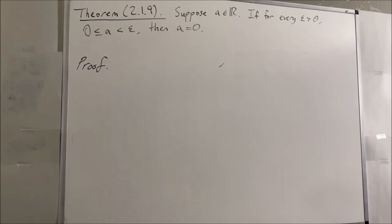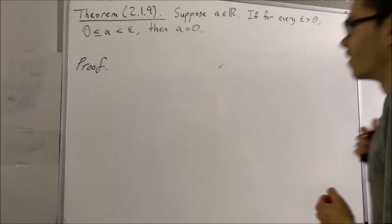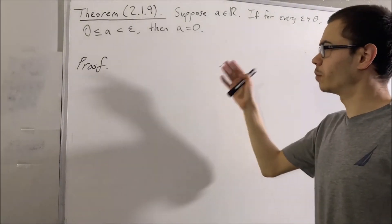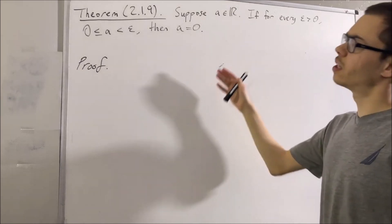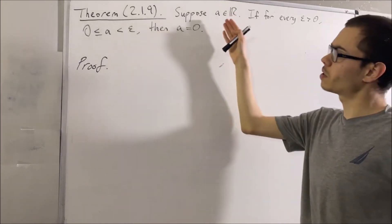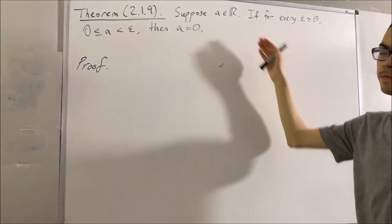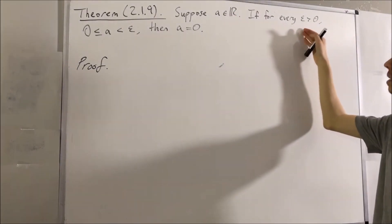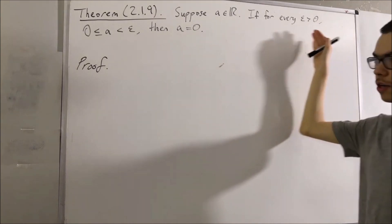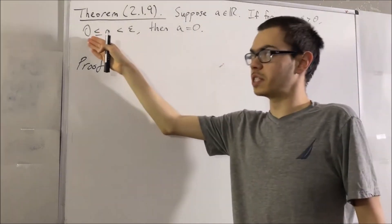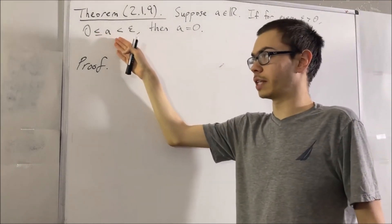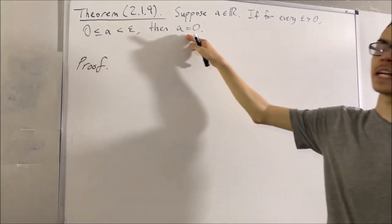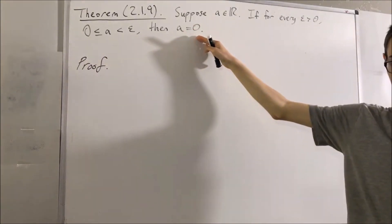Hello! In this video, we are going to prove the following theorem. Suppose A is a real number. If for every epsilon greater than 0, 0 is less than or equal to A is less than epsilon, then A is equal to 0.